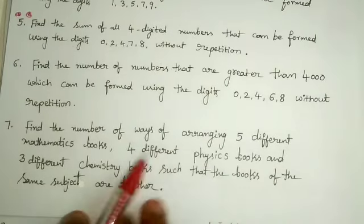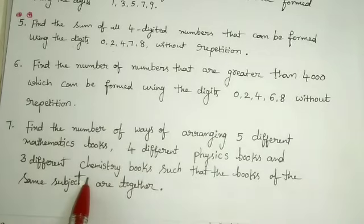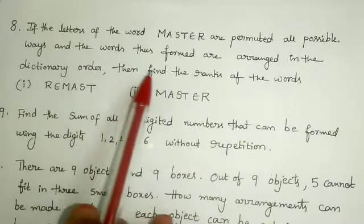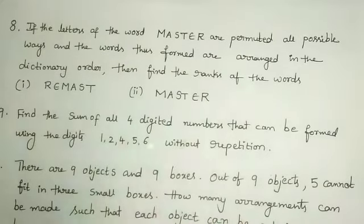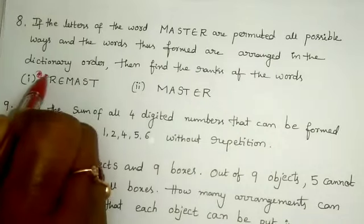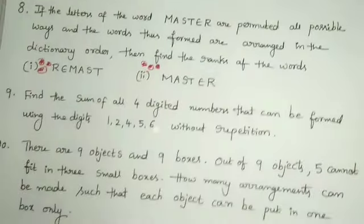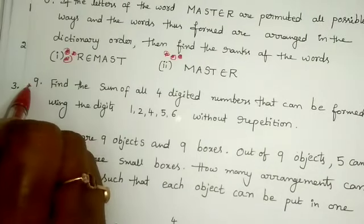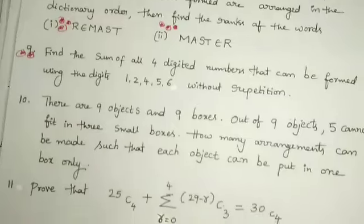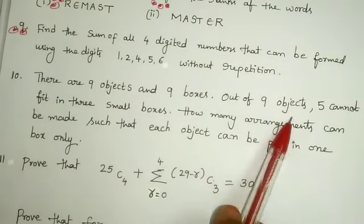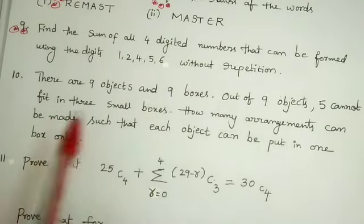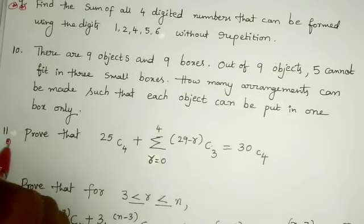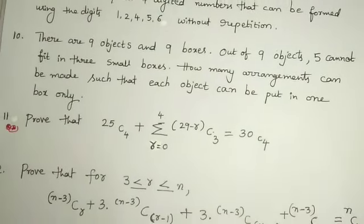Next one: find the number of ways of arranging five different mathematics books, four different physics books and three different chemistry books such that the books of the same subject are together. Next one: if the letters of the word MASTER are permuted in all possible ways and the words are arranged in dictionary order, then find the ranks of the words REMAST and MASTER — very very very important 4-mark questions, guaranteed to appear in the examination. Next: find the sum of all four-digit numbers that can be formed using 1, 2, 4, 5, 6 without repetition — also very very important. Next: there are 9 objects and 9 boxes; out of the 9 objects 5 can't fit in the 3 small boxes — find how many arrangements can be made such that each object is put in one box only. Next: prove that 25C4 plus summation r equals 0 to 4 of 29 minus r C3 is equal to 30C4 — most important 4-mark question.